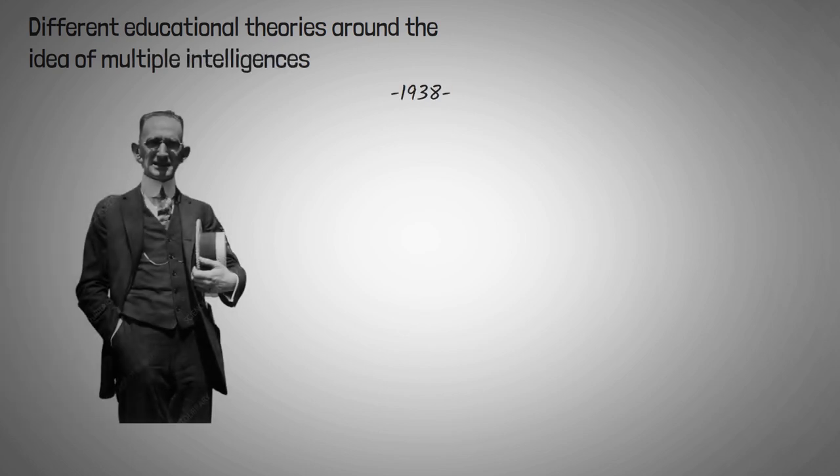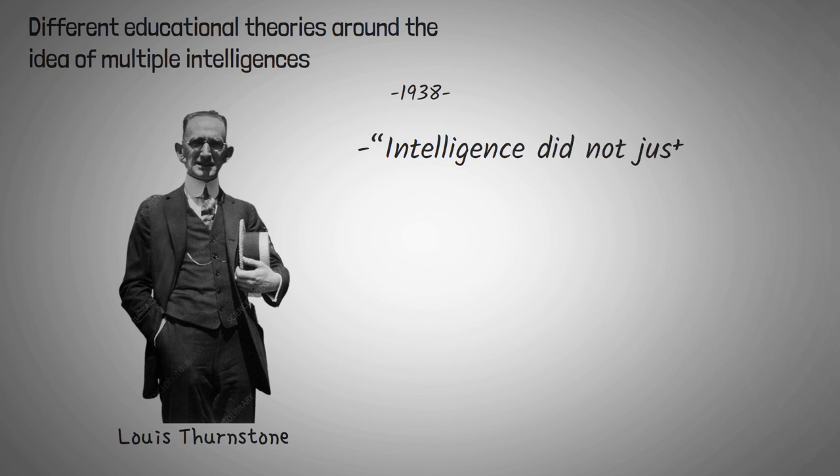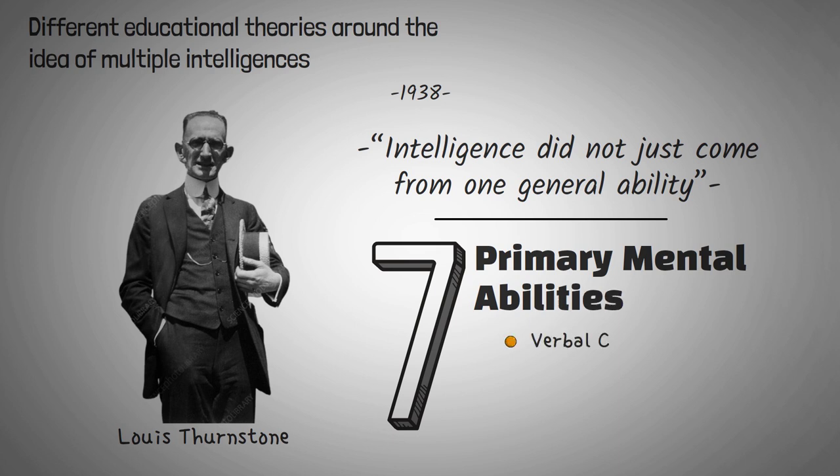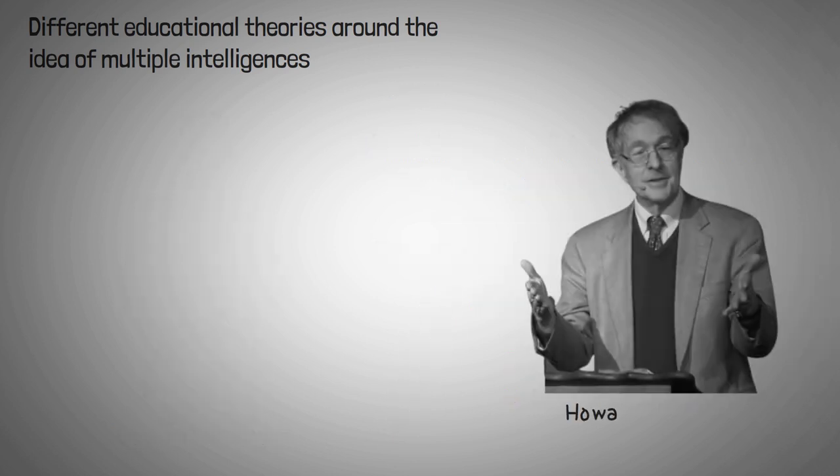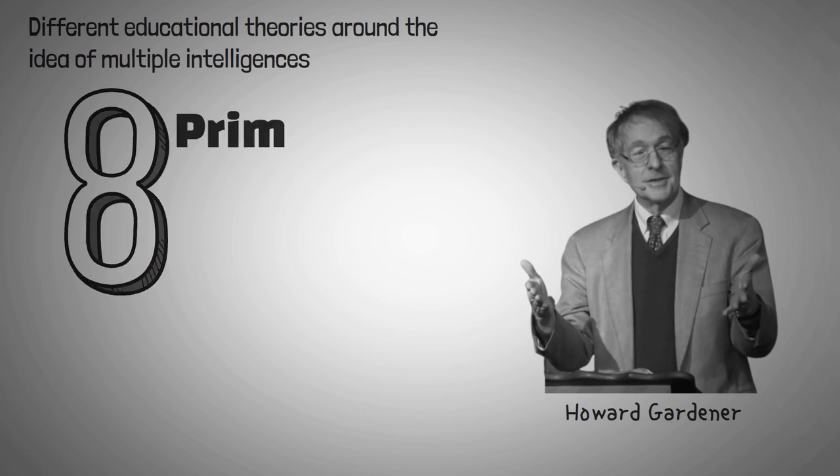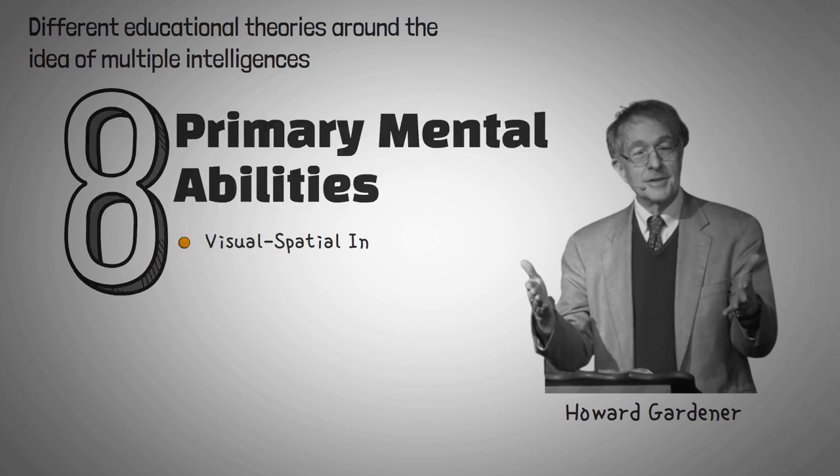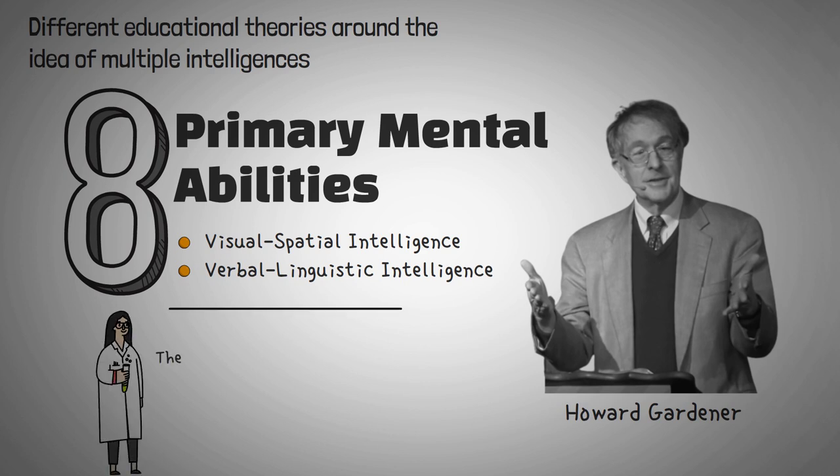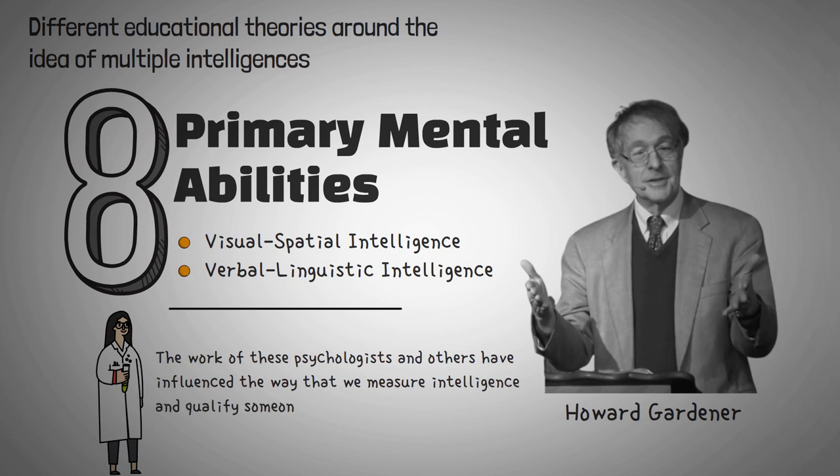A few different educational psychologists have created theories around the idea of multiple intelligences. In 1938, Lewis Thernstone wrote that intelligence did not just come from one general ability. He listed seven primary mental abilities, including verbal comprehension, perceptual speed, and spatial visualization. Howard Gardner has provided a more up-to-date theory on multiple intelligences. Gardner listed a set of eight intelligences, including visual-spatial intelligence and verbal-linguistic intelligence. The work of these psychologists and others have influenced the way that we measure intelligence and qualify someone as advanced or deficient in some areas.